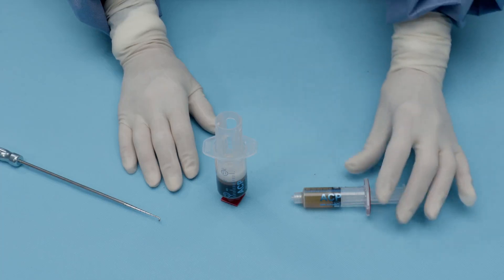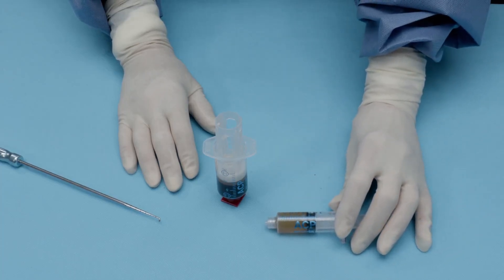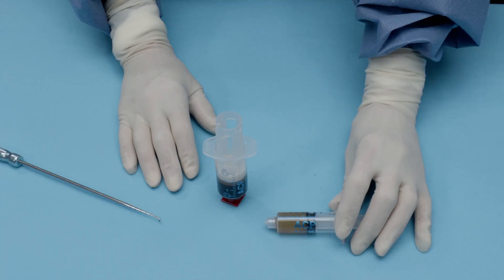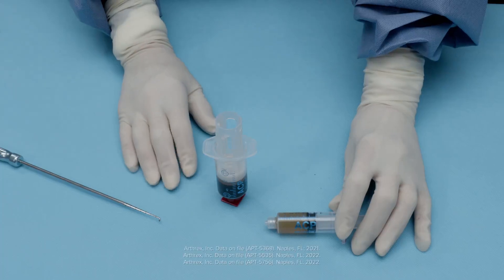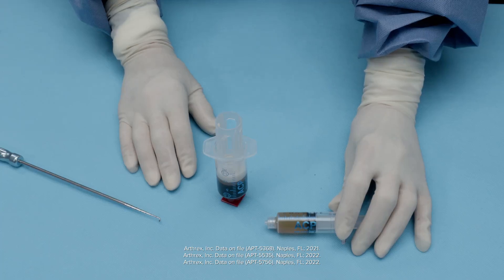The ACP Max device allows you to process 30, 60, or 90 cc's of peripheral blood for a final ACP Max product that ensures a high platelet and low neutrophil final product for use. This can all be done in a very efficient workflow manner.